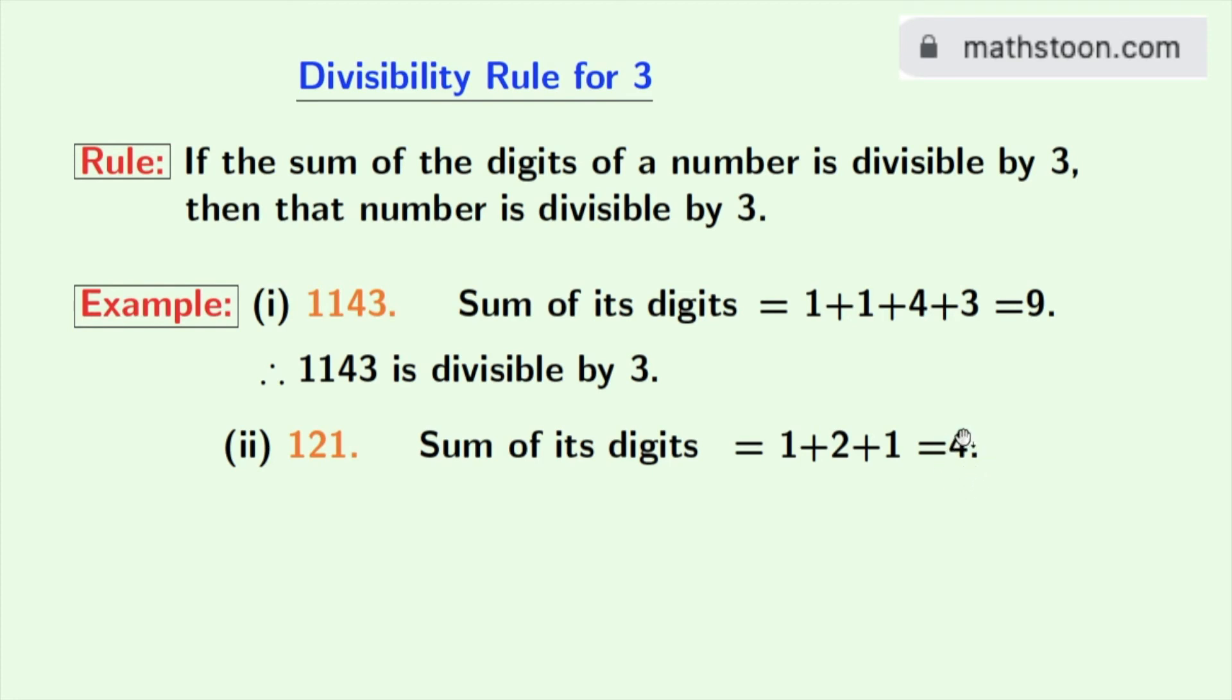Look that 4 is not divisible by 3. So, according to this rule, 121 is not divisible by 3.